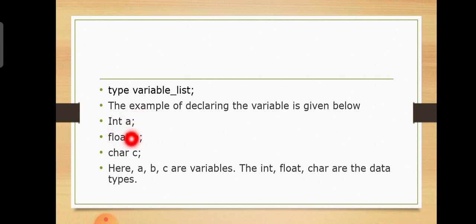We can also provide values while declaring. We have three types: integer, float, and char. The integer variables are A, B, C. Here A, B, C are variables of one data type.